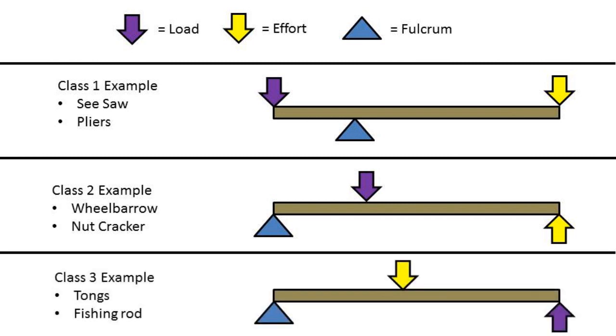If the fulcrum is on one end with the effort in the middle and the load is on the opposite end, this is a third class lever. Some examples of third class levers are salad tongs or a fishing rod.